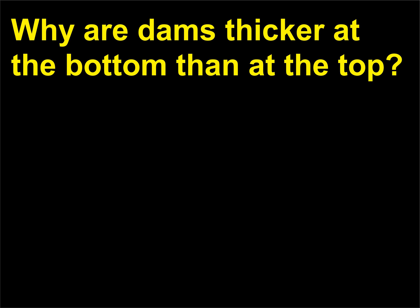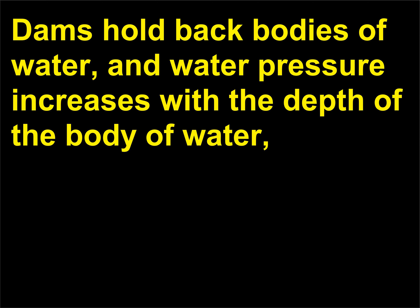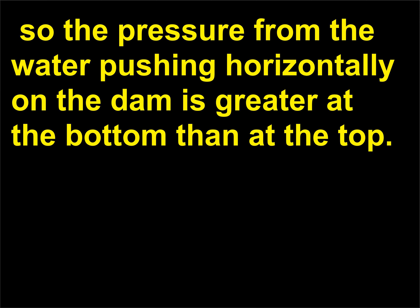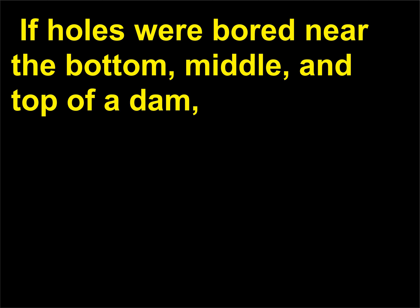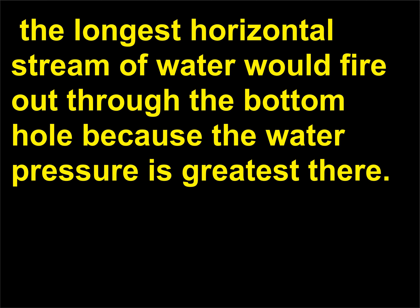Why are dams thicker at the bottom than at the top? Dams hold back bodies of water, and water pressure increases with the depth of the body of water. So the pressure from the water pushing horizontally on the dam is greater at the bottom than at the top. If holes were bored near the bottom, middle, and top of a dam, the longest horizontal stream of water would fire out through the bottom hole because the water pressure is greatest there.